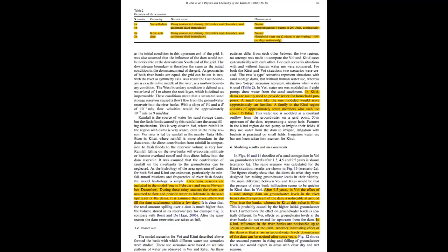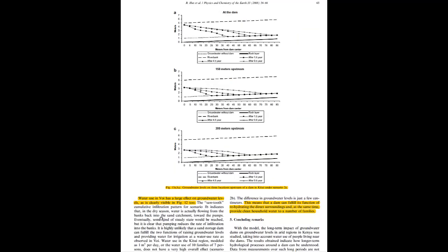There's less infiltration in Voi and more in Kitui. The reason is the water use in Voi has a large effect—they're pumping a lot of water out, so there's much less effect on the immediate environment. In Kitui, there's a lot of effect on a larger environment, hundreds of meters away from the dam. This leads to the conclusion that the dam can fulfill its function of rehydrating the direct surroundings as long as you just have very small household use.